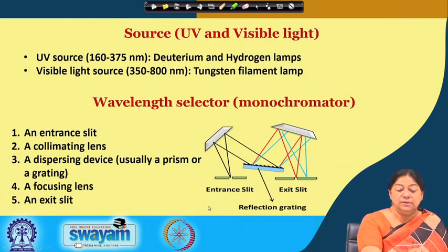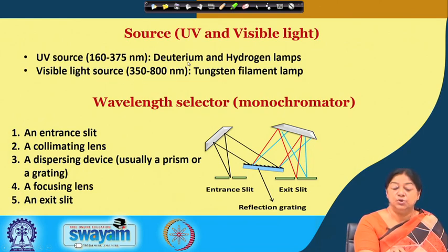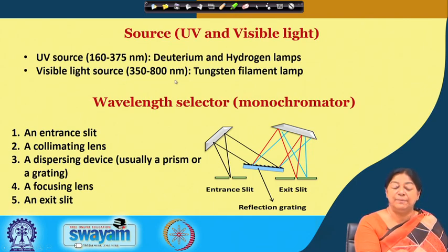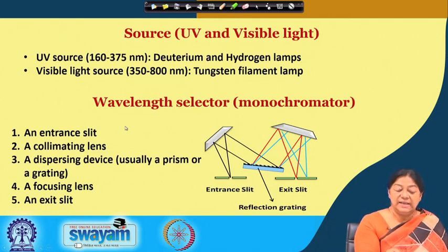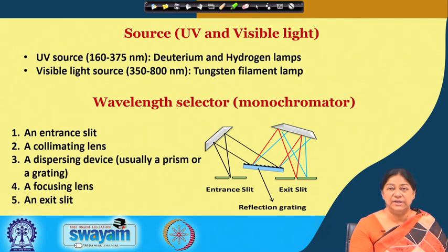When we look at UV and visible light sources, the machine has a UV source and a visible light source that cover two different wavelength regions. We have the deuterium lamp (D2 lamp) covering approximately 160 to 375 nanometers, and then the tungsten filament lamp for the visible light source, slightly overlapping in range. The wavelength selector is essentially a reflection grating that selects the specific wavelength of interest for our measurements.